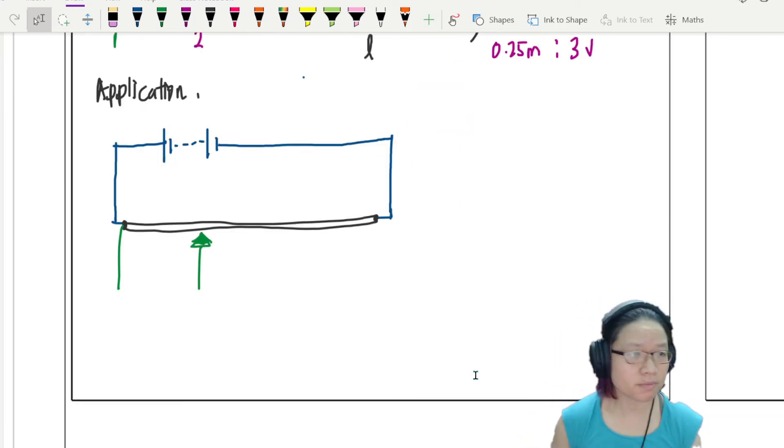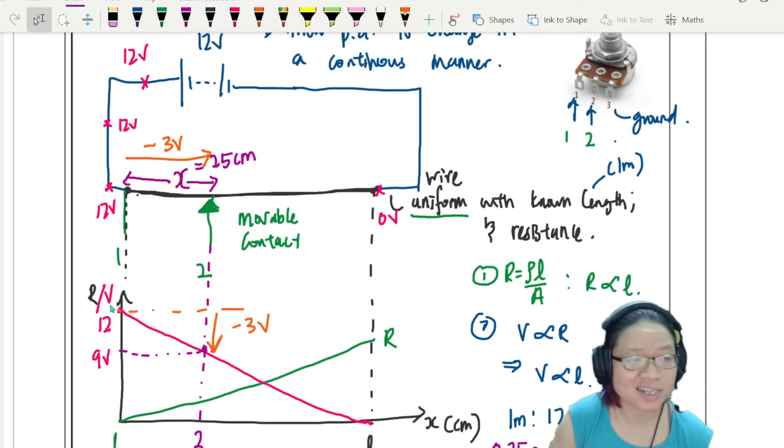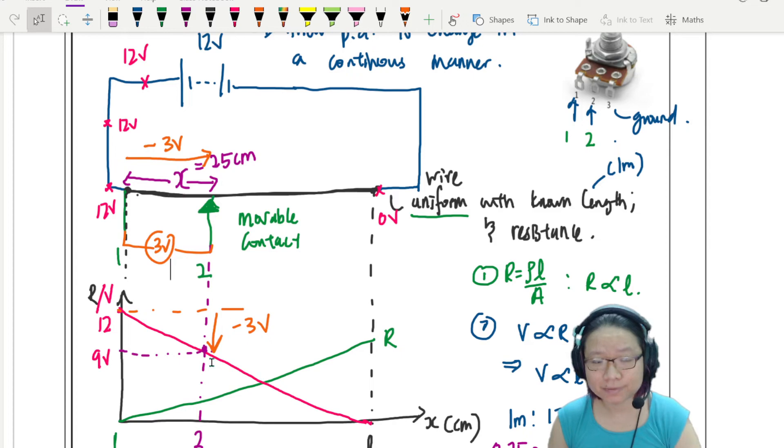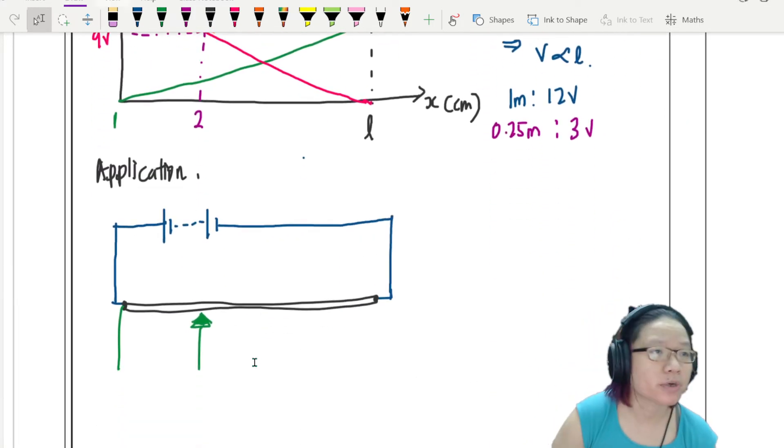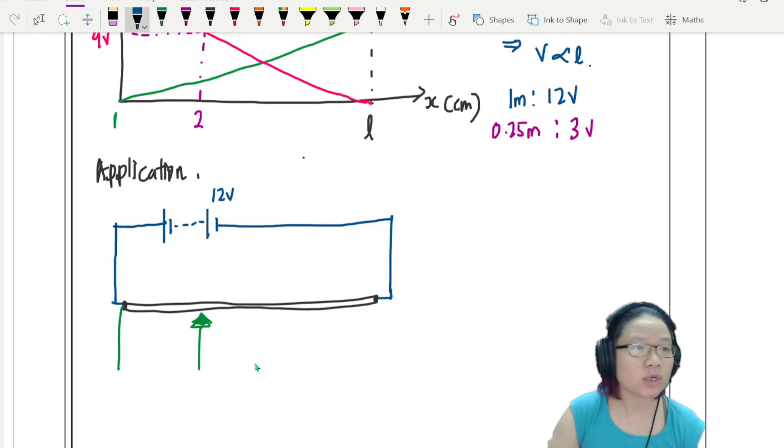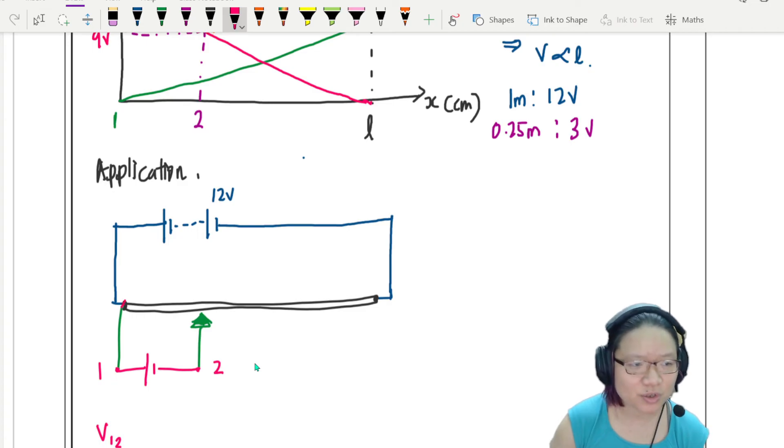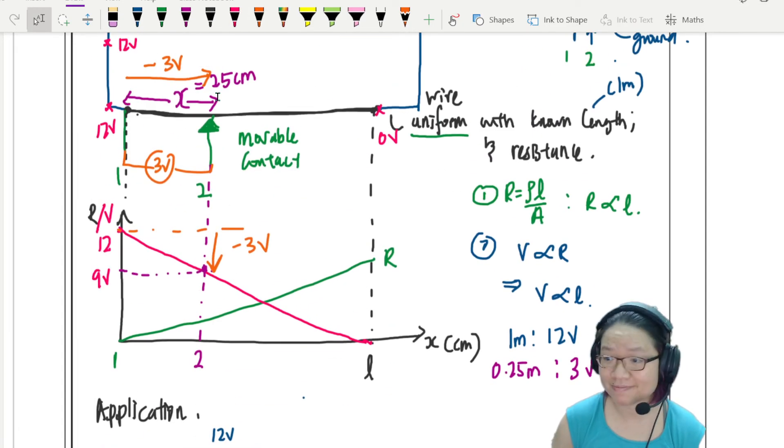So instead of having the potential drop constant, my graph will now look like at the power supply, I increase, and then throughout the wire, I decrease that way. So I have a continuous way to control the potential difference. This is the strength of the potentiometer. So I'll just write this down here. The role of the potentiometer is to allow the potential difference - basically it's a continuous potential divider. So allow the potential difference to change in a continuous manner.